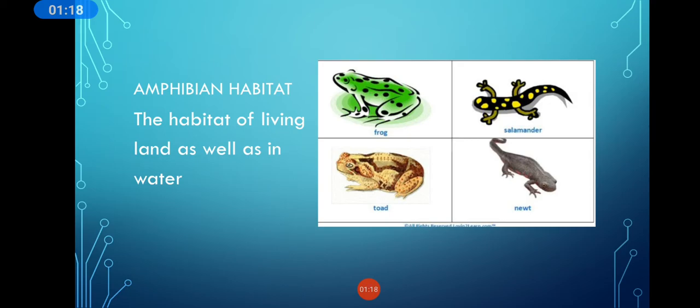Examples we have in amphibian habitat are frog, salamander, newt, toad, crocodile, and many more.